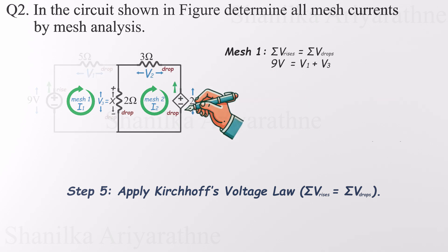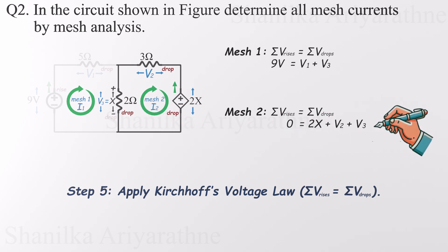Moving on to mesh two, this loop has no voltage rises. Every component here contributes a drop. We've got the dependent voltage source, labeled 2x, plus drops across V2 and V3. So the KVL equation for mesh two is zero volts equals 2x plus V2 plus V3. And that gives us our two core equations, one from each mesh. Keep them clean, double-check your signs, and these will form the backbone of solving the entire circuit.